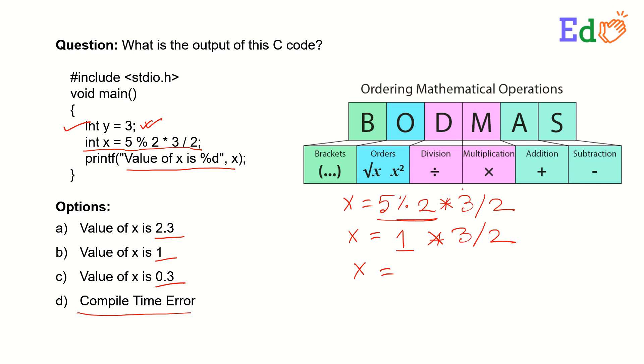What is the next step? Then it comes down to the division, so this division operation will work first. So 1 multiplied by 3 divided by 2, that comes down to the integer value 1. So the value of x becomes 1. This is the value of x as per our concepts.